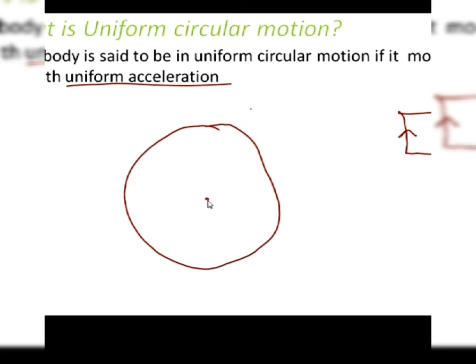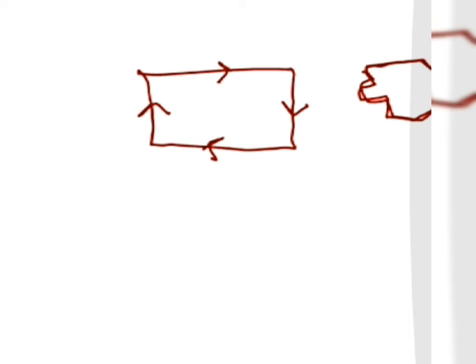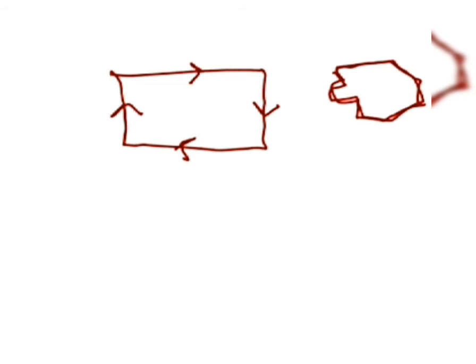Now suppose another person moves along a path like this. You can see here, as soon as he's moving in this direction and takes a right turn, the direction has to change. Even though the magnitude of velocity remains the same - suppose he was moving at 10 kilometers per hour - as soon as he changes direction, the velocity changes. If we take this path here, he has to change his direction.